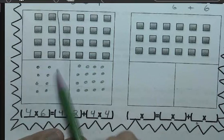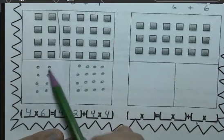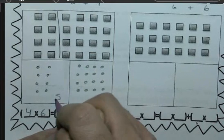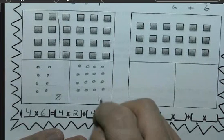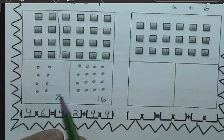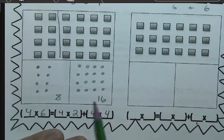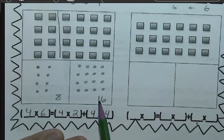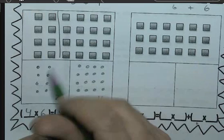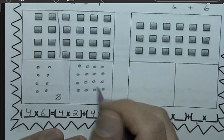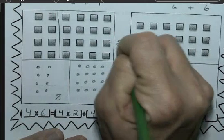Now 4 times 4 is 16. So now I need to add my two products to find my answer. So 8 plus 16 is going to be 24. So the answer to this array is going to be 24. So I'm going to write my answer near my upper array and circle it.